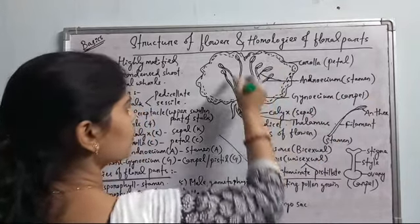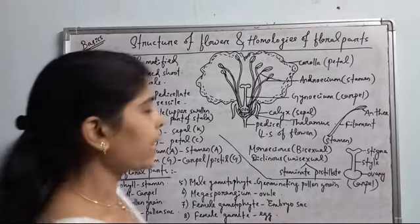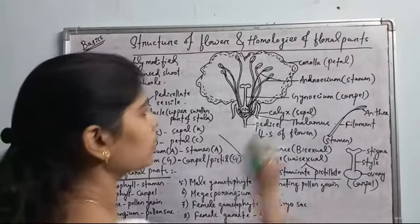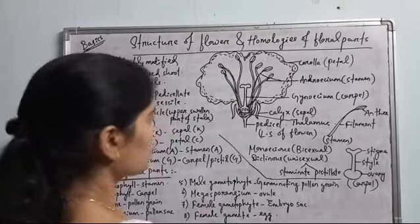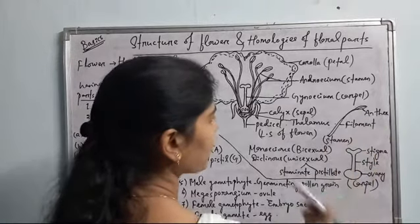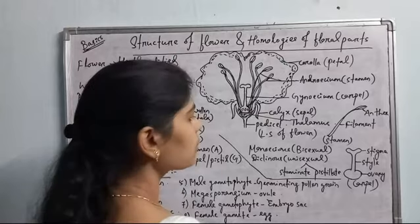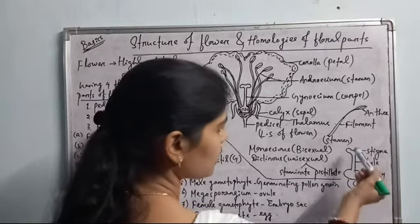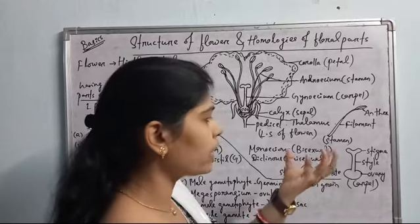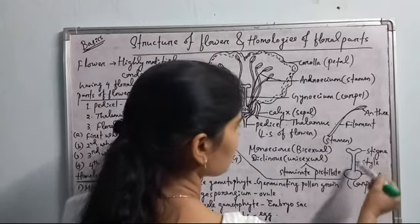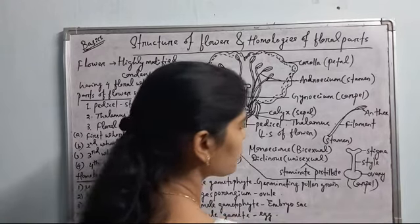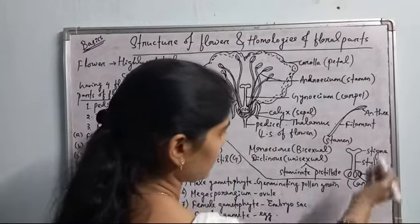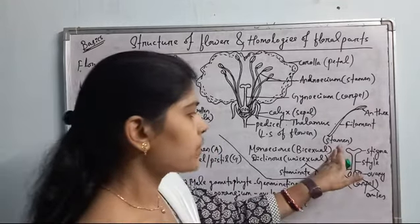The third whorl is androecium — the individual unit is stamen. The stamens are present surrounding the gynoecium. Gynoecium is present in the center and is the female reproductive part of the flower; its individual unit is carpel. A stamen has two parts: filament and anther, connected by a connective. The carpel or pistil has three parts: stigma — the upper surface on which pollen grains are received, which appears sticky; style — a longitudinal stalk-like structure connecting stigma with the ovary; and ovary, which contains the ovules.